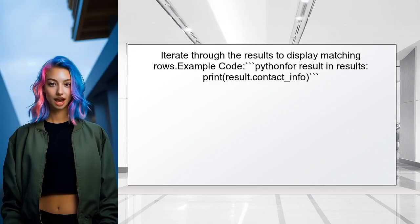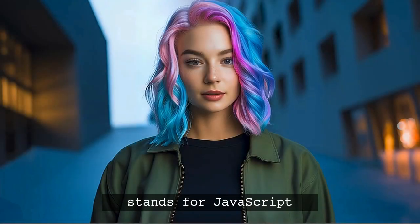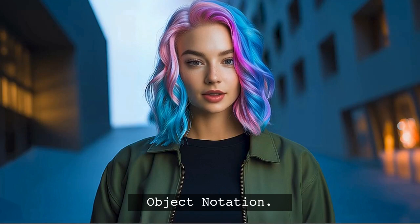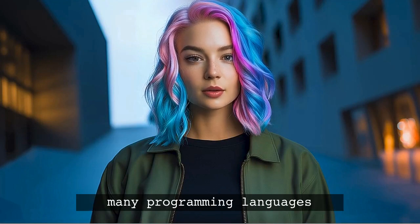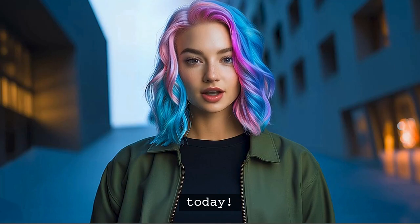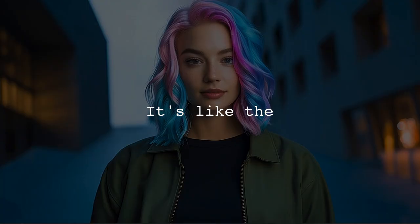Finally, the user can iterate through the results to display the matching rows. This will allow them to see all entries that contain the specified telephone number. Fun fact: JSON stands for JavaScript Object Notation, but it's used in many programming languages today — it's like the universal language for data interchange.